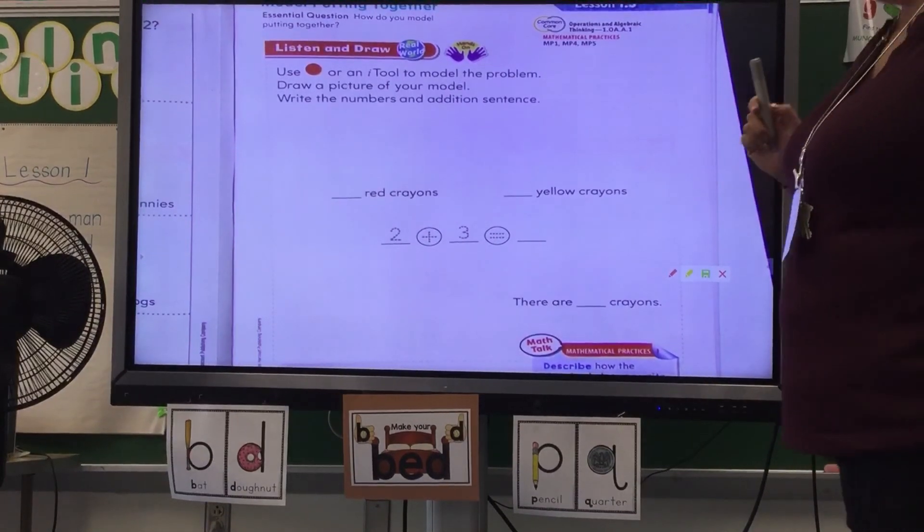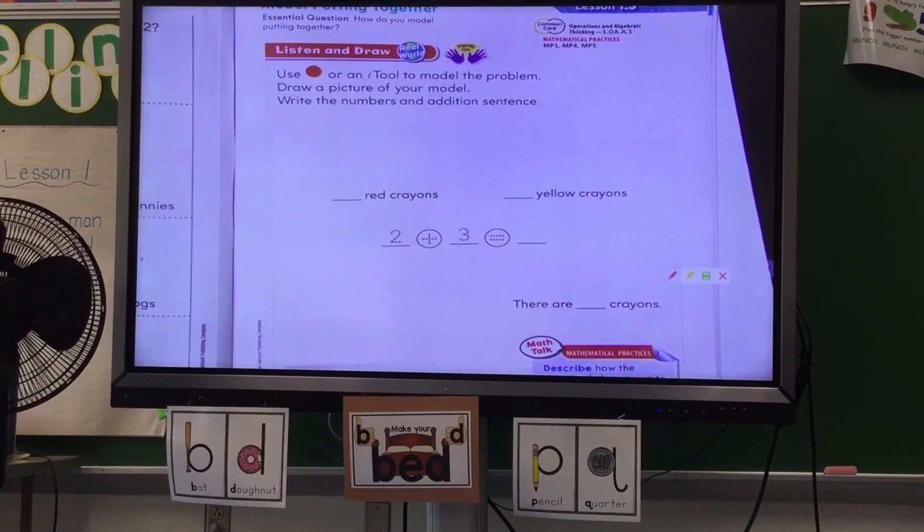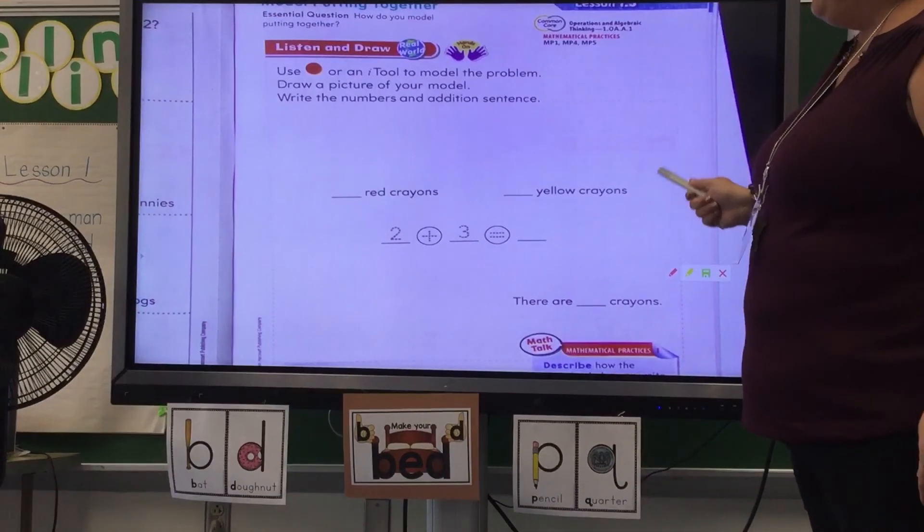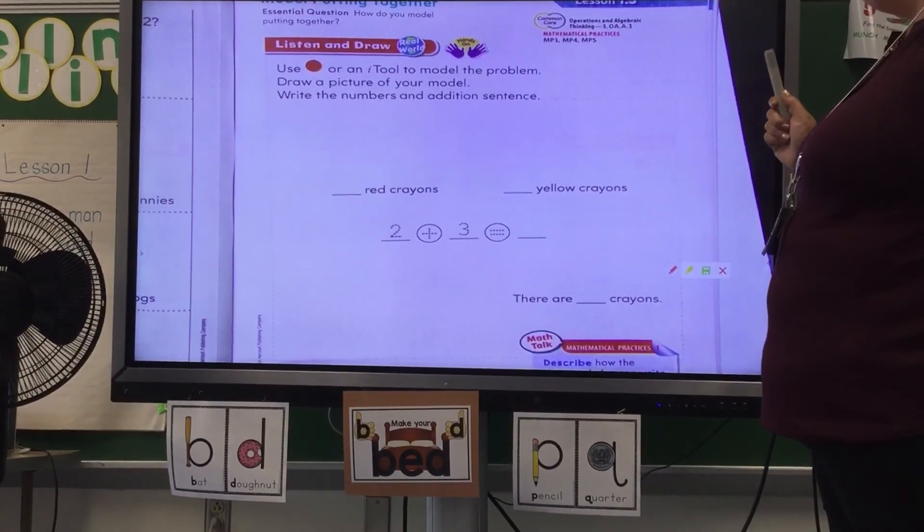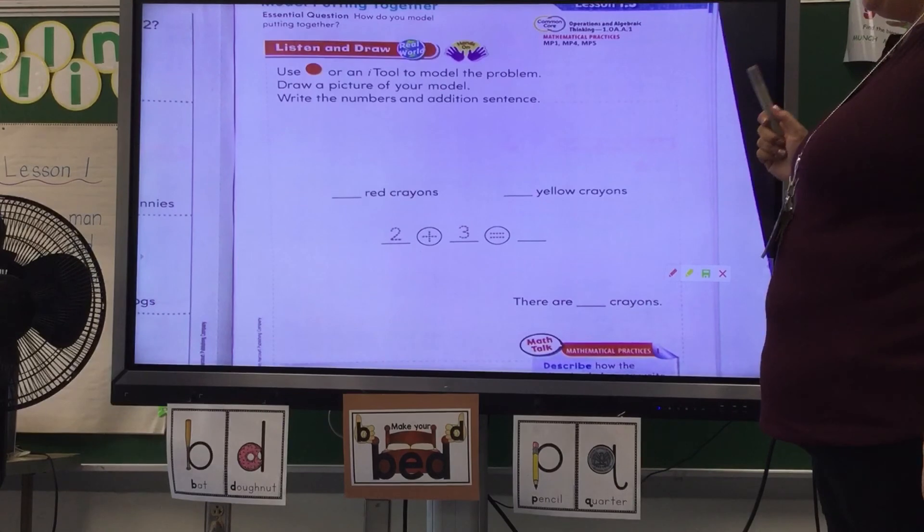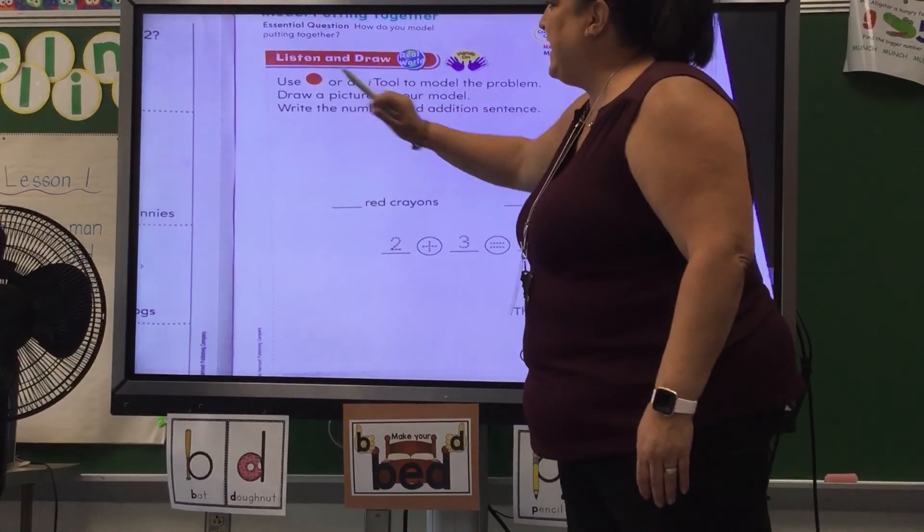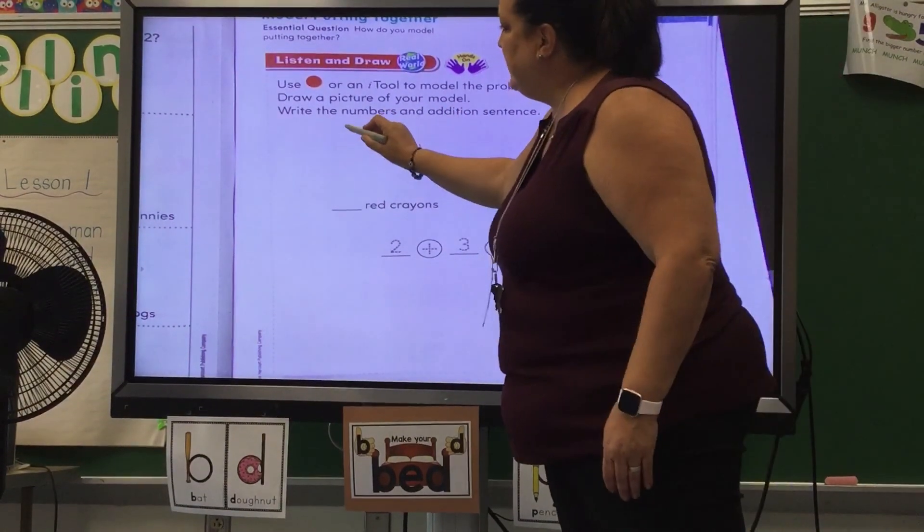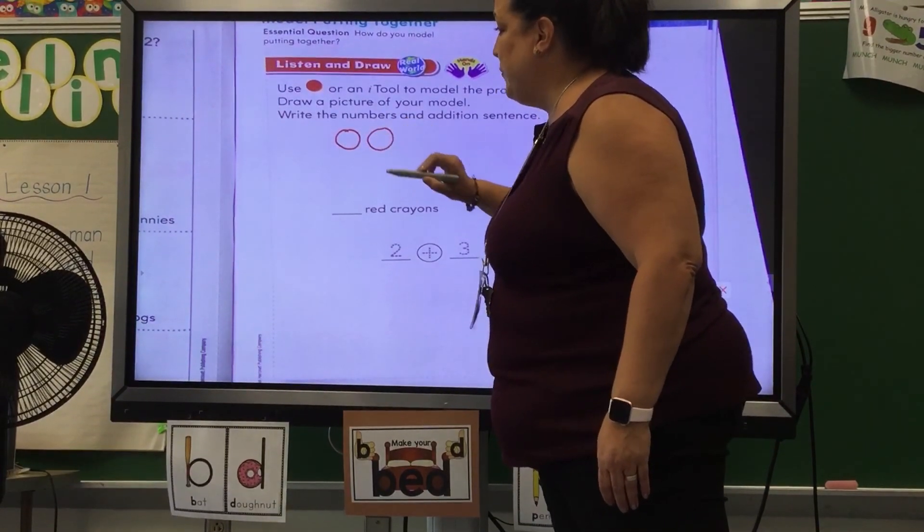This is math lesson 1.3 and it's on page 25. The story problem is we have two red crayons and three yellow crayons. How many crayons do we have enough? So what I'm going to do is, it says to use counters or an eye tool. The easiest thing is just to take your pencil or you can even use your crayon and use red like I am.